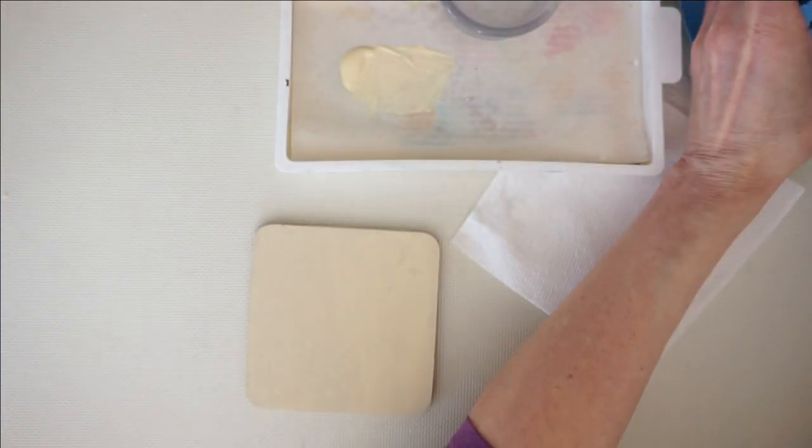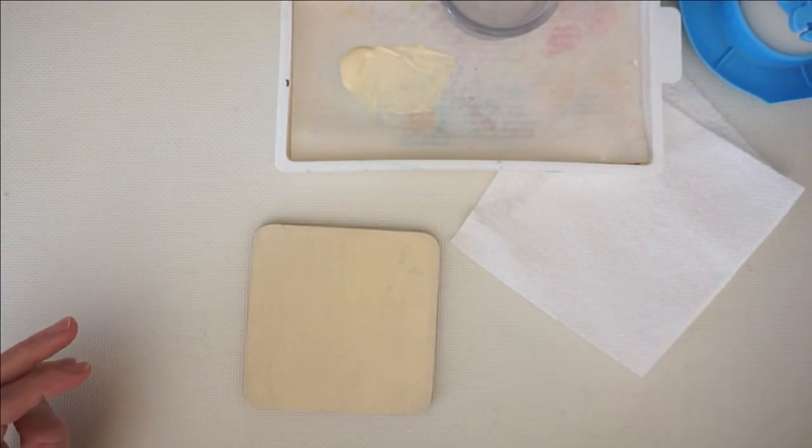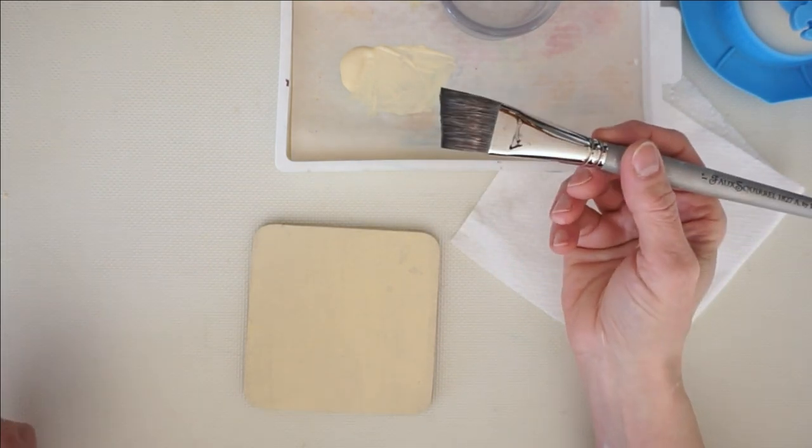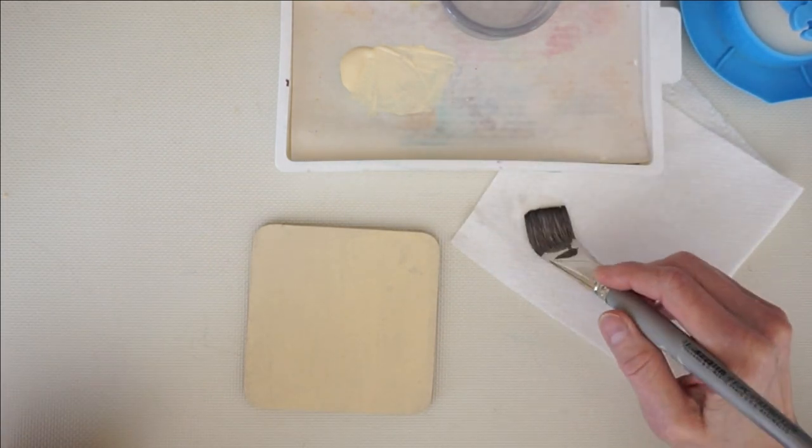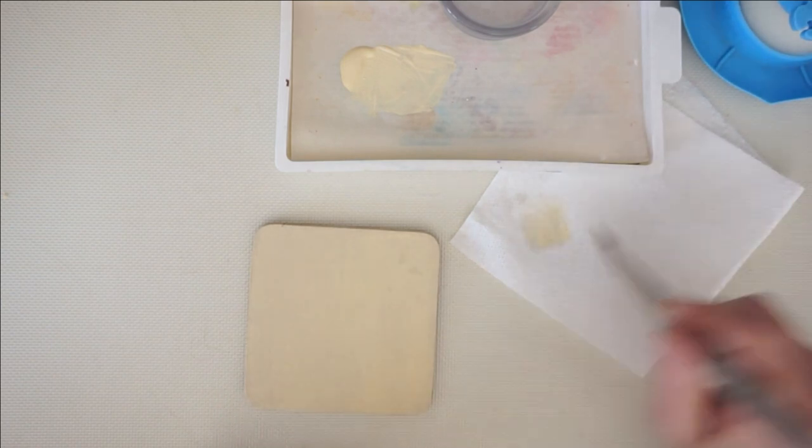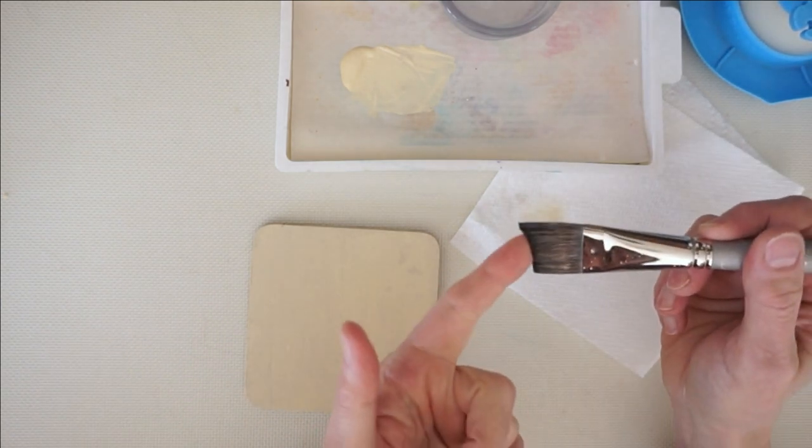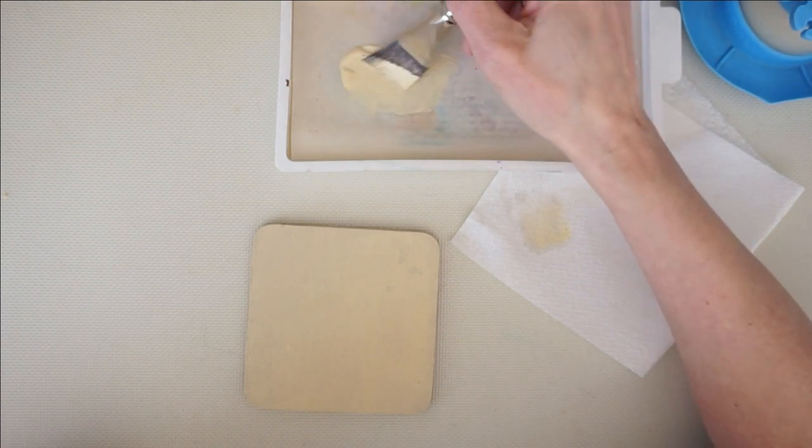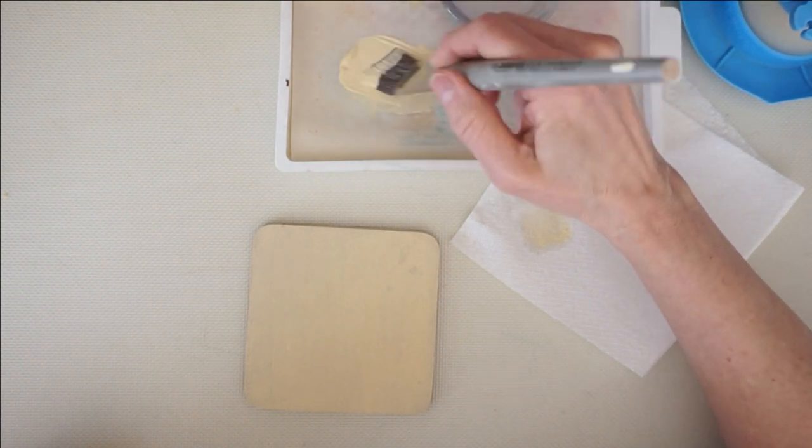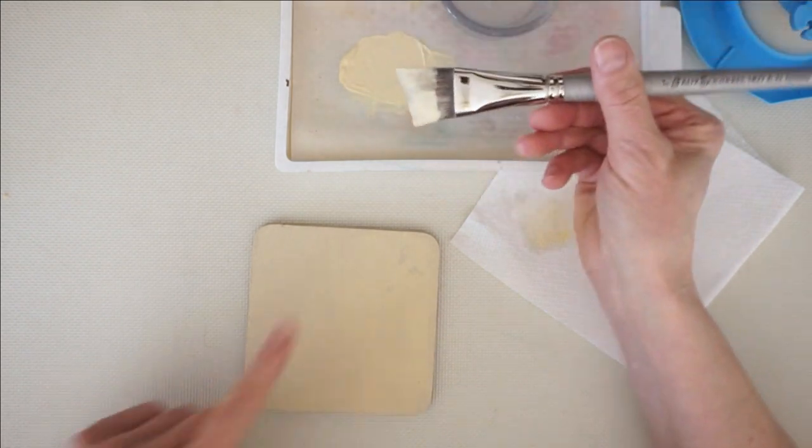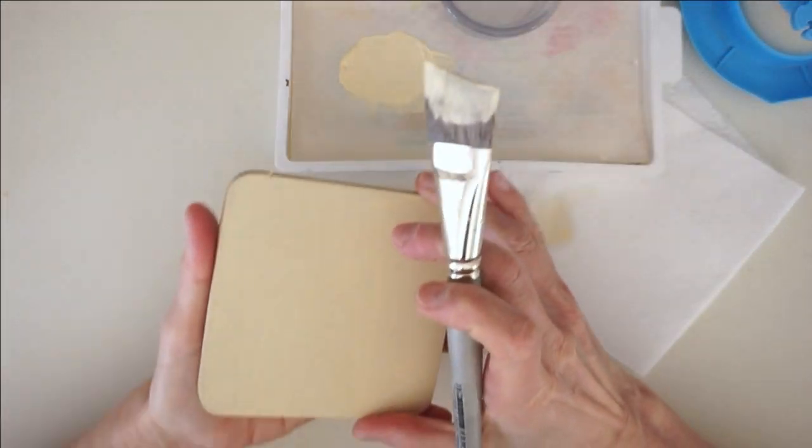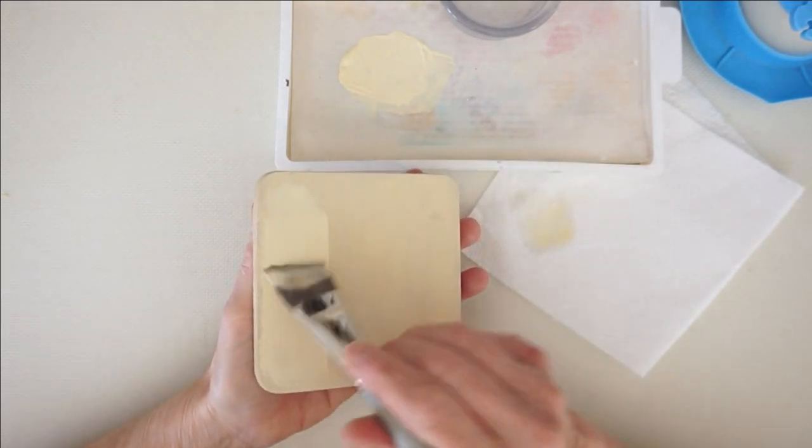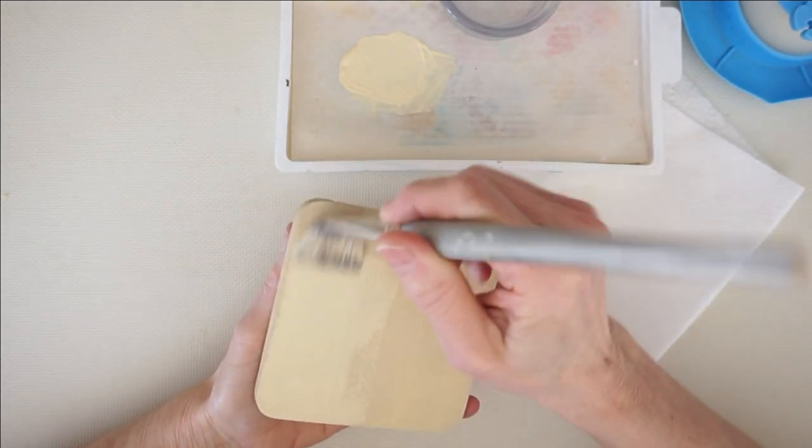So I'm going to move my water to this side because I'm right-handed. I rinsed my brush, I'm blotting it. I'm not rubbing it. I want it pretty damp but not wet. And then I'm going to pick up more paint for a second layer. So again, about two-thirds up the bristles, and I'm going to start laying more paint down.